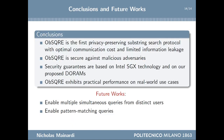To wrap up, Obscure is the first privacy-preserving substring search protocol with optimal communication cost, limited information leakage, and security against a malicious adversary. The security guarantees stem from SGX technology and the W-oblivious RAM designs we propose, whose security is proven in the paper. Obscure exhibits practical performance on real-world use cases with an acceptable security cost. In the future, we plan to make Obscure usable in a multi-user scenario and to enable queries for strings containing wildcard characters.